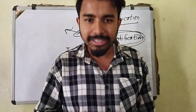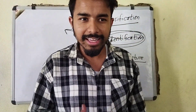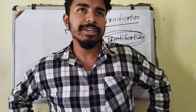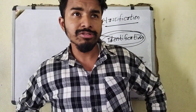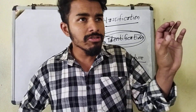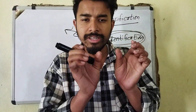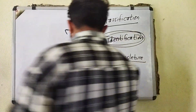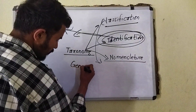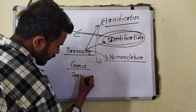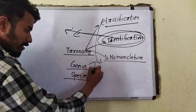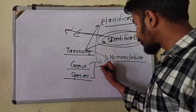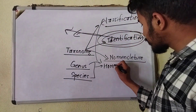Nomenclature means giving names on the basis of their scientific character. For example, the human scientific name is Homo sapiens. The first part is the genus character and the next one is the species character. The combination of genus and species forms the scientific name: Homo sapiens.